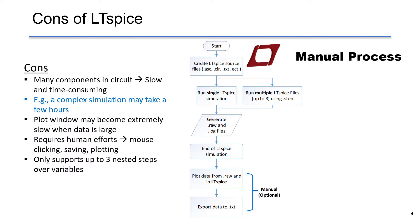However, LTSpice has some limitations that may bring some difficulty to your work. The simulation becomes time-consuming if many components are in the circuit. For example, a complex simulation may take at least a few hours to run a 20ms transient analysis. As a result, it generates a few gigabytes of data that is extremely slow to display in the waveform plot window.